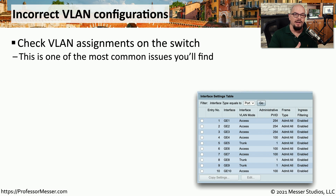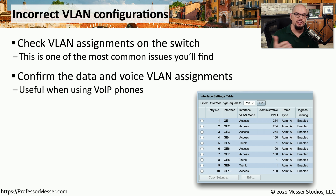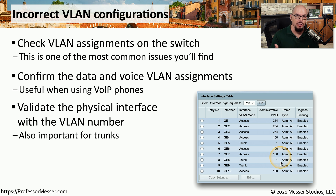In an enterprise, you may have hundreds or thousands of switches, each with hundreds or thousands of devices. This makes it easy to accidentally configure an incorrect VLAN on an individual port. If a device is connected to the wrong VLAN, it may be assigned the incorrect IP address or have no connectivity. The switch administrator should examine exactly what VLANs are assigned to each interface and make sure they match the proper configuration. Also ensure that trunk connections include all the VLANs that need to traverse them. Usually a single configuration change can reassign the VLAN for that interface, and the user can communicate on the network.